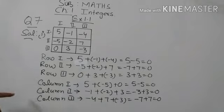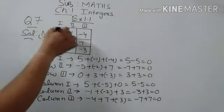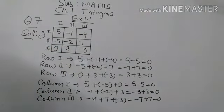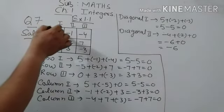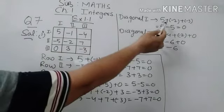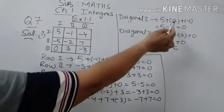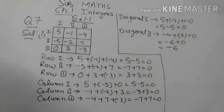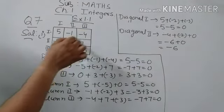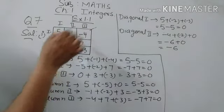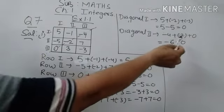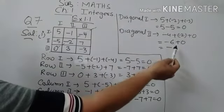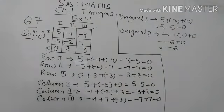Now we find diagonal one and diagonal two. For diagonal one, we add 5, minus 2, and minus 3: 5 minus 2 minus 3 equals 0. For diagonal two, we add minus 4, minus 2, and 0: minus 4 plus minus 2 plus 0 equals minus 6.